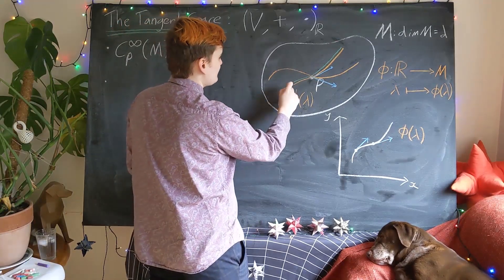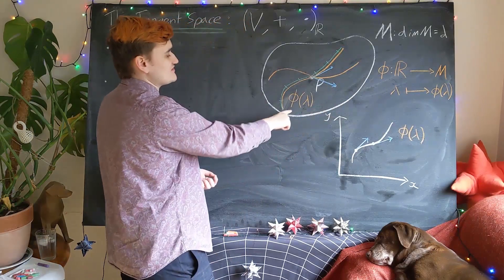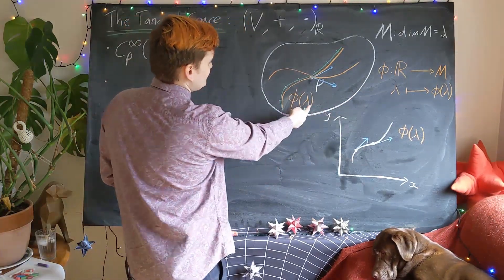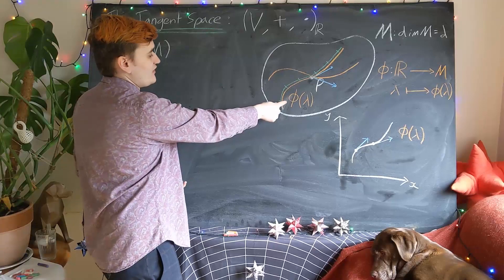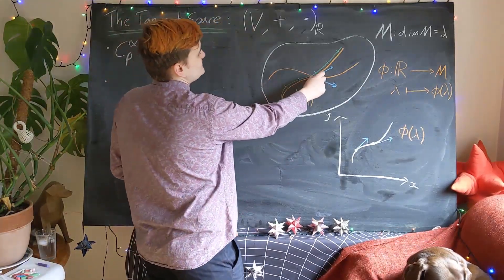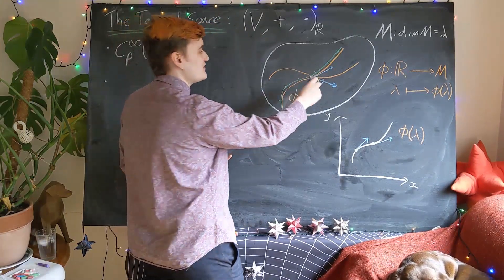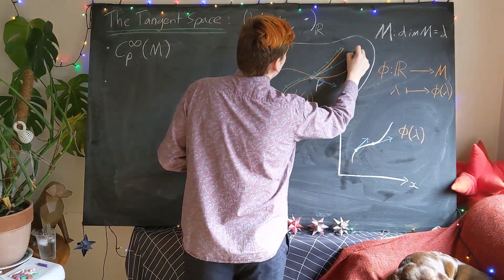So it's this green and orange curve tracing out the exact same path. But the green curve travels twice as fast, or the lambda parameter is twice as large as the parameter for the orange curve. So essentially all this is going to do is create a vector that points in the same direction, but because we're running through twice as fast, the velocity is just going to be twice as long.